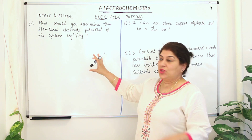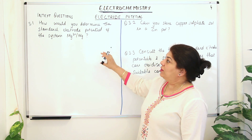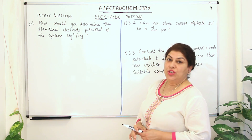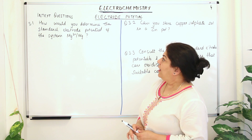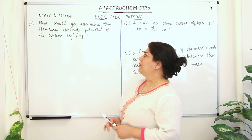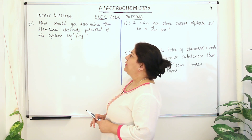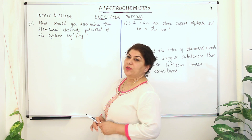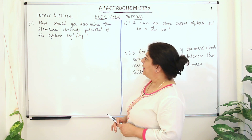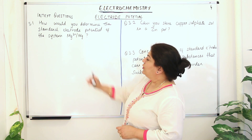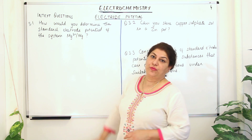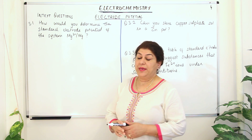These in-text questions are question 3.1 which reads: how would you determine the standard electrode potential of the system Mg²⁺/Mg? So this is the oxidized and reduced form for magnesium.